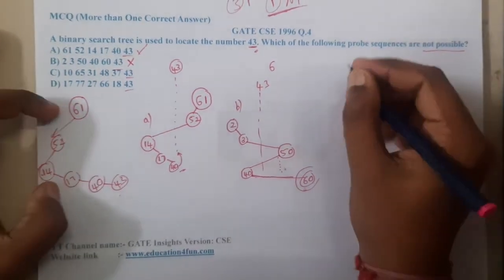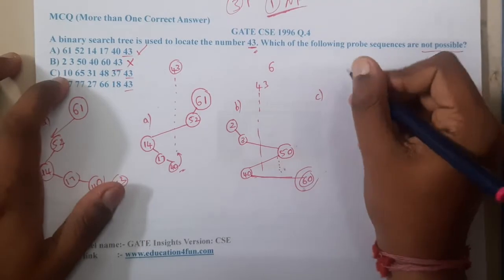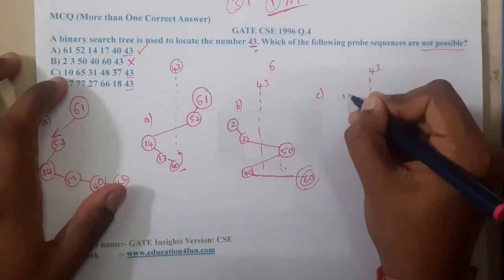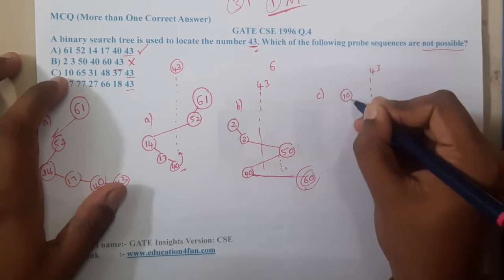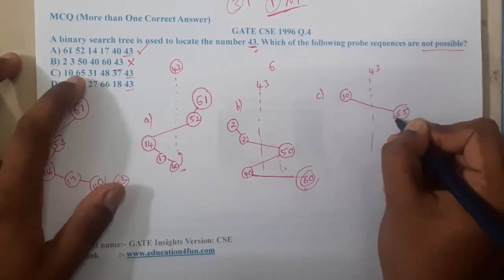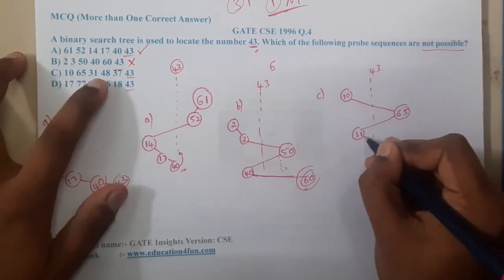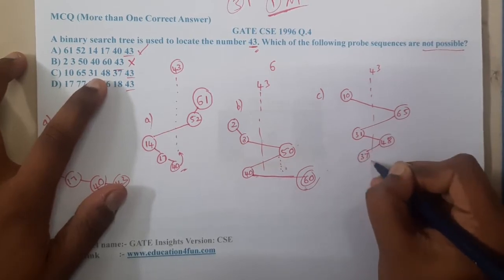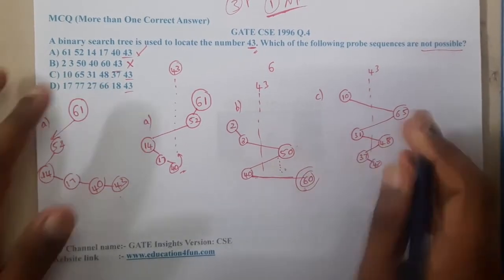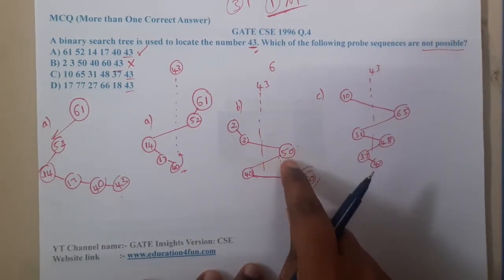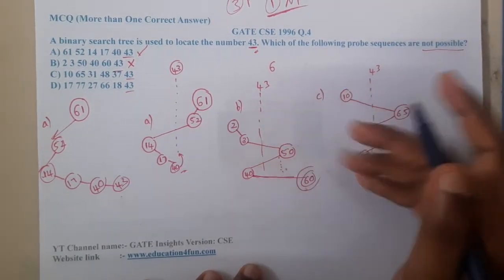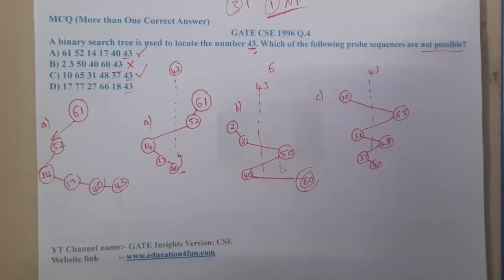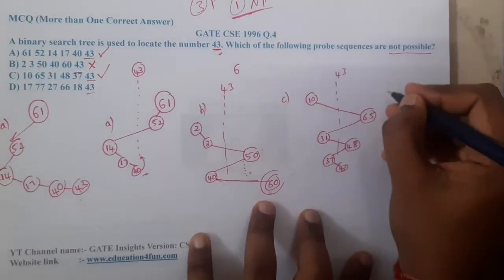Now let us check Option C. Starting at 10, we went directly to 65, came back to 31, then went to 48, came back to 37, and then went to 43. Is there any overbounds issue? In Option B, instead of going at max to 50 we went to 60 — that was an overbounds. Here in Option C there is no such issue, so this sequence is also correct.